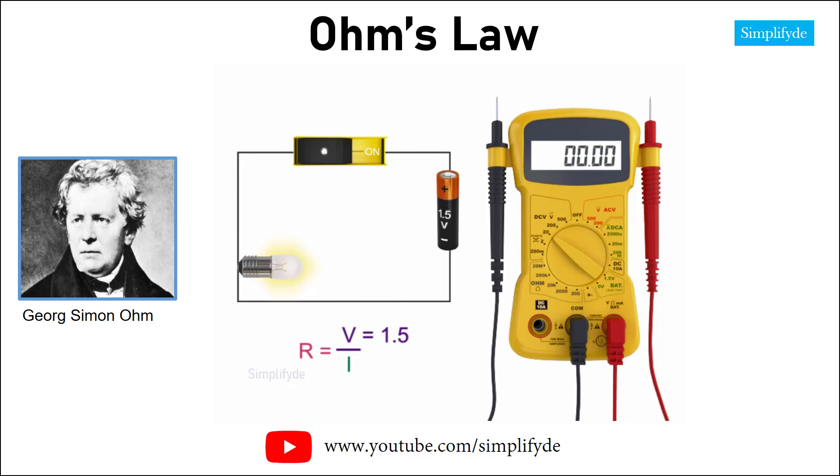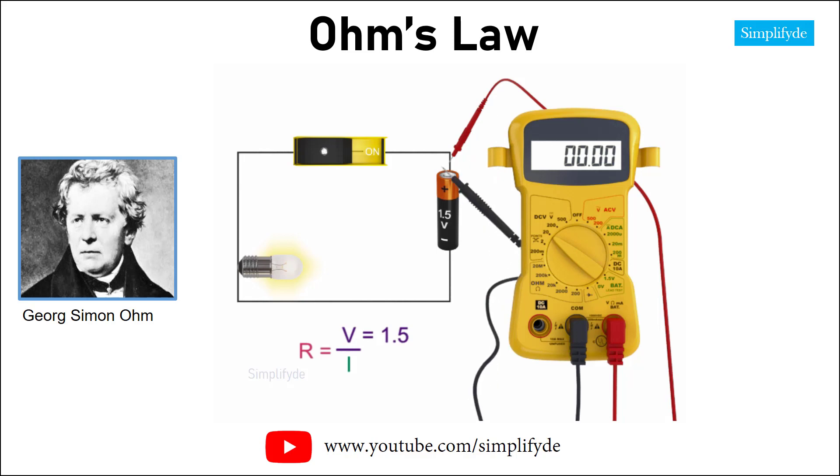After visually inspecting the terminals of the battery to determine the polarity of the battery, place the red probe across the wire on the positive side of the battery and the black probe across the negative side. You should get a reading of around 1.5 volts. The voltage of the battery is 1.57 volts and about what we would expect.